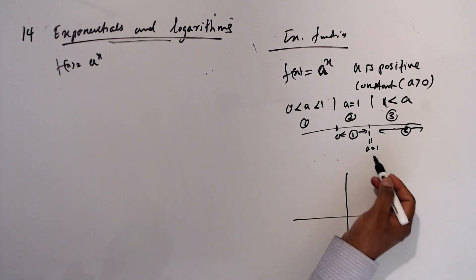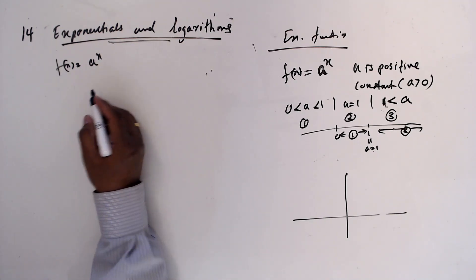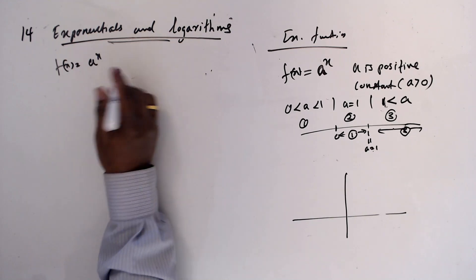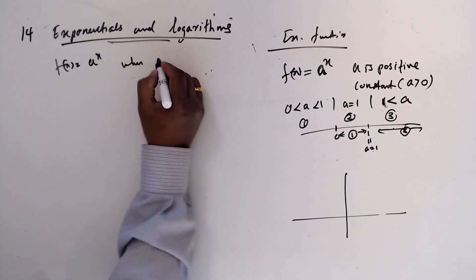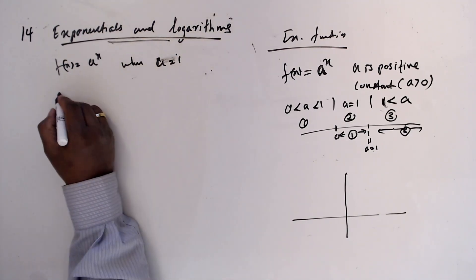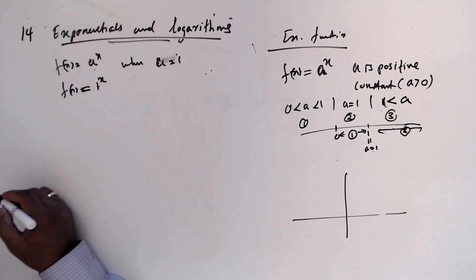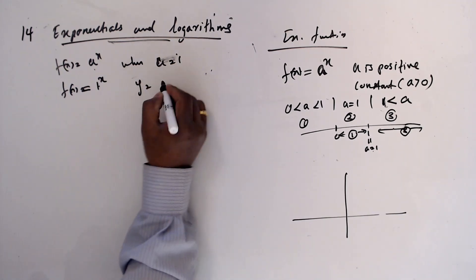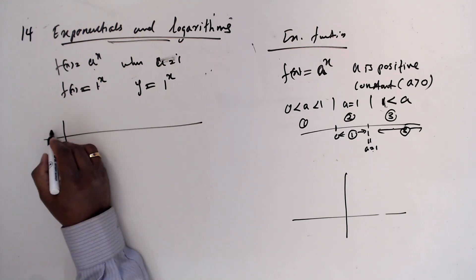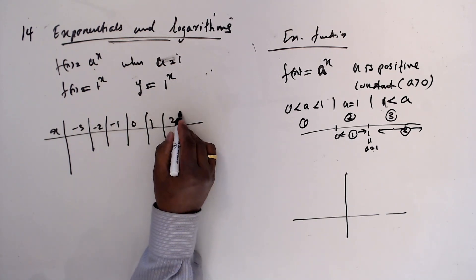Now let's consider what happens when a = 1. We draw y = 1^x. Setting up a table with x = −3, −2, −1, 0, 1, 2, 3 and finding the corresponding y values.